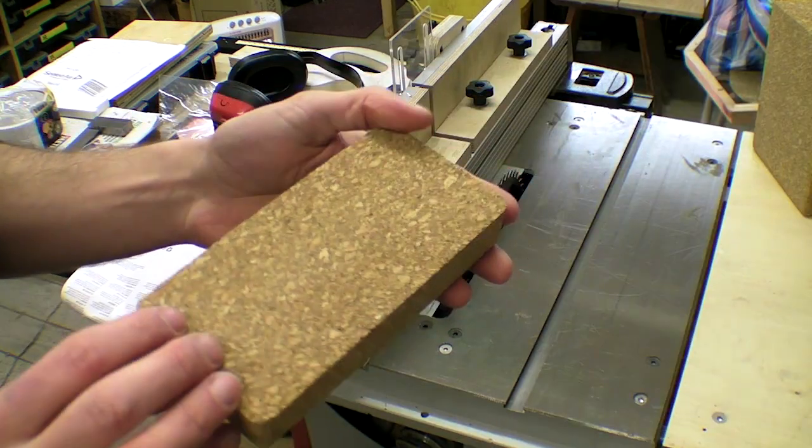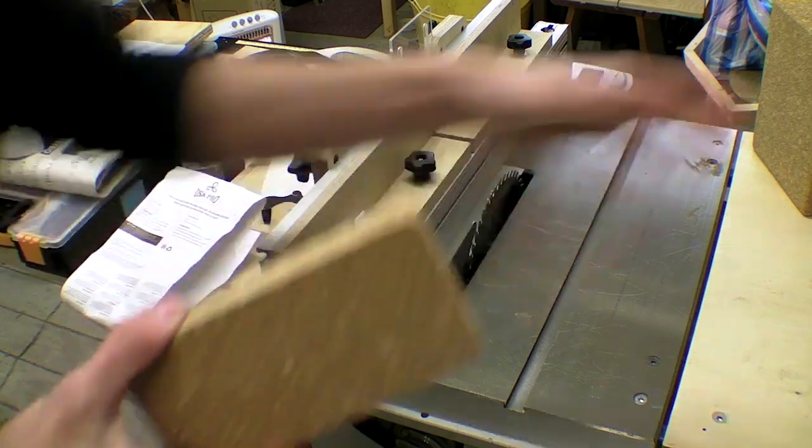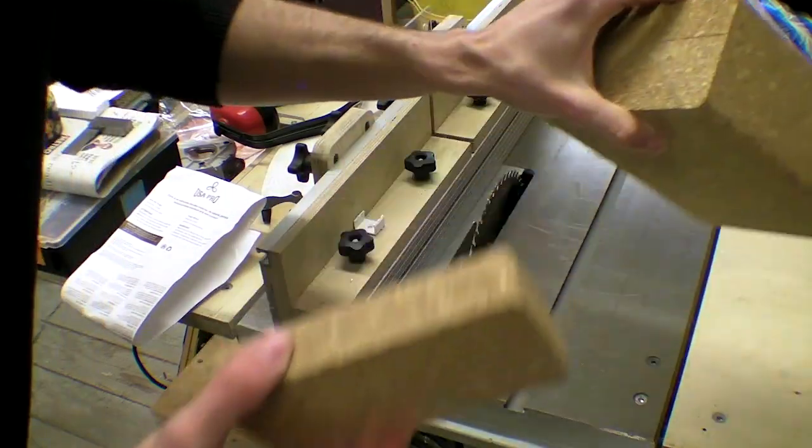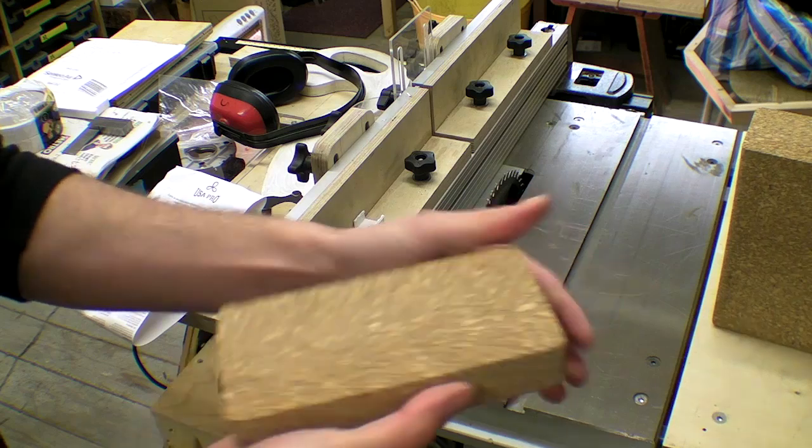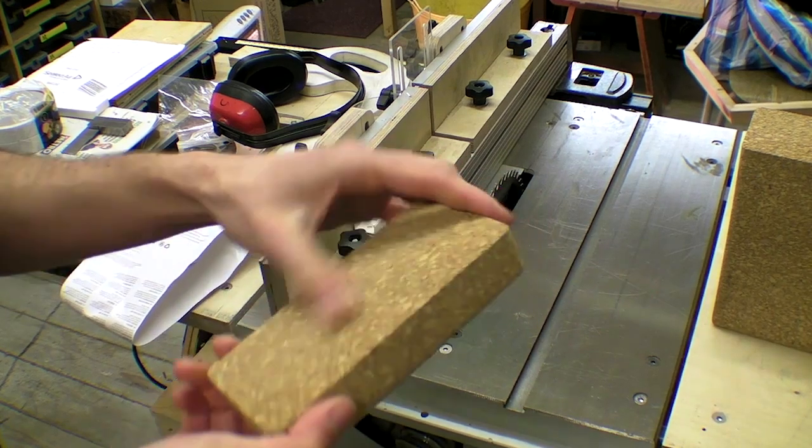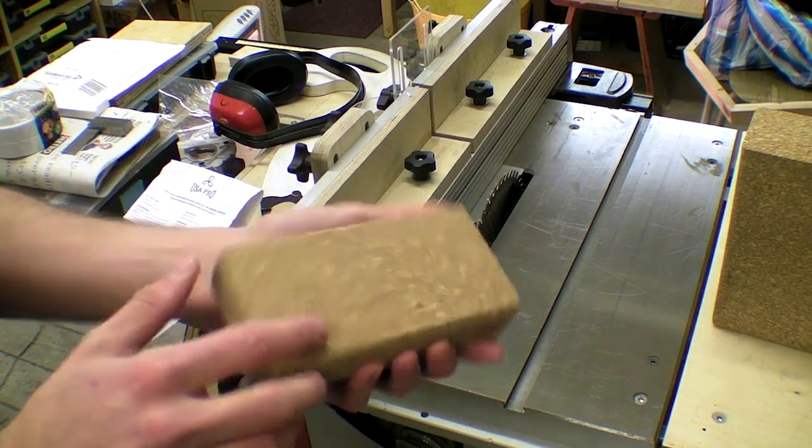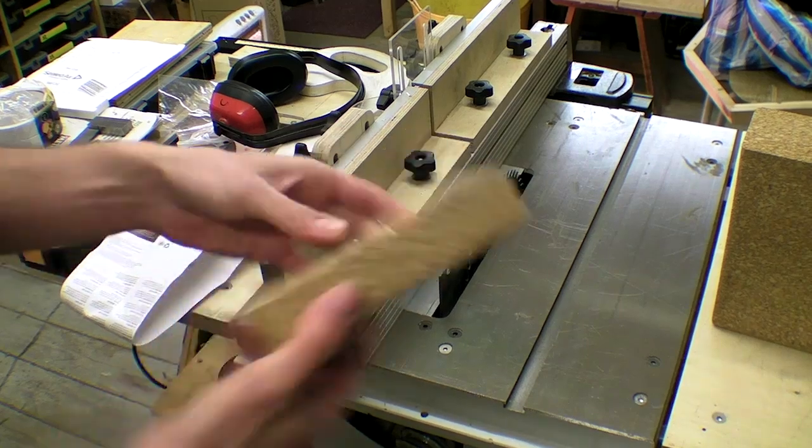There we go. It's solid cork as far as I can tell. That's really nice. In fact I might buy more of this stuff. This could make an interesting material to make some sanding blocks out of. It's a nice size in fact.